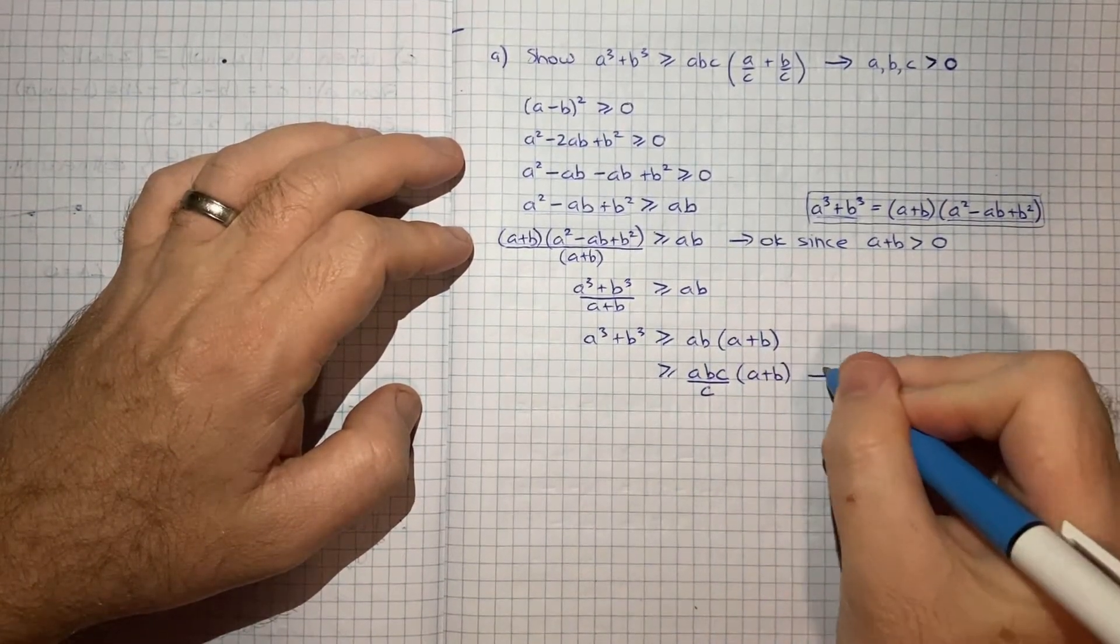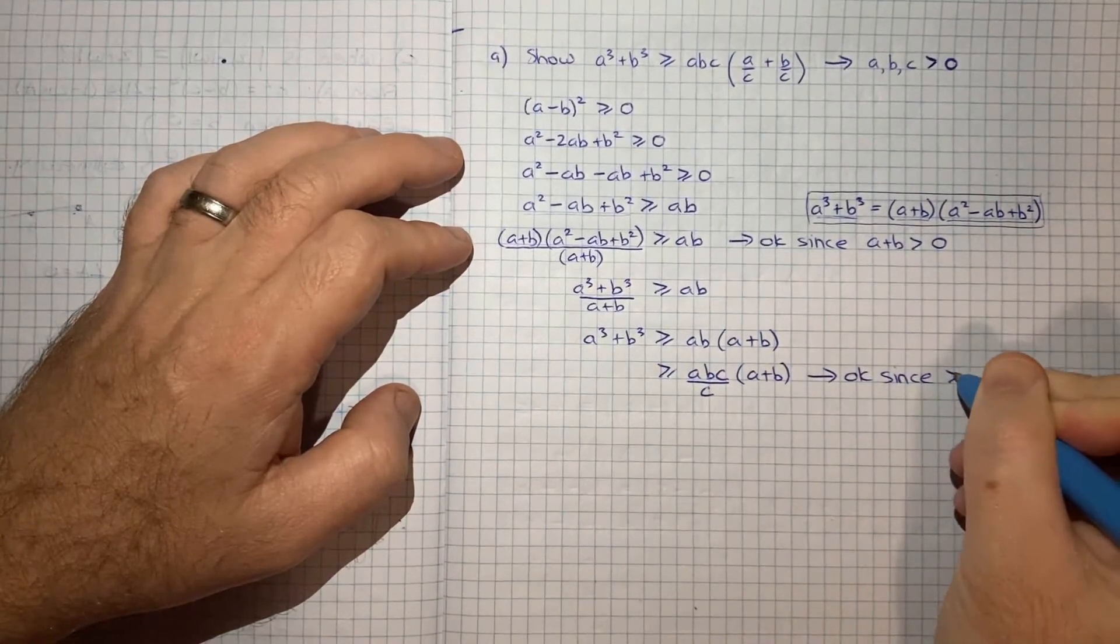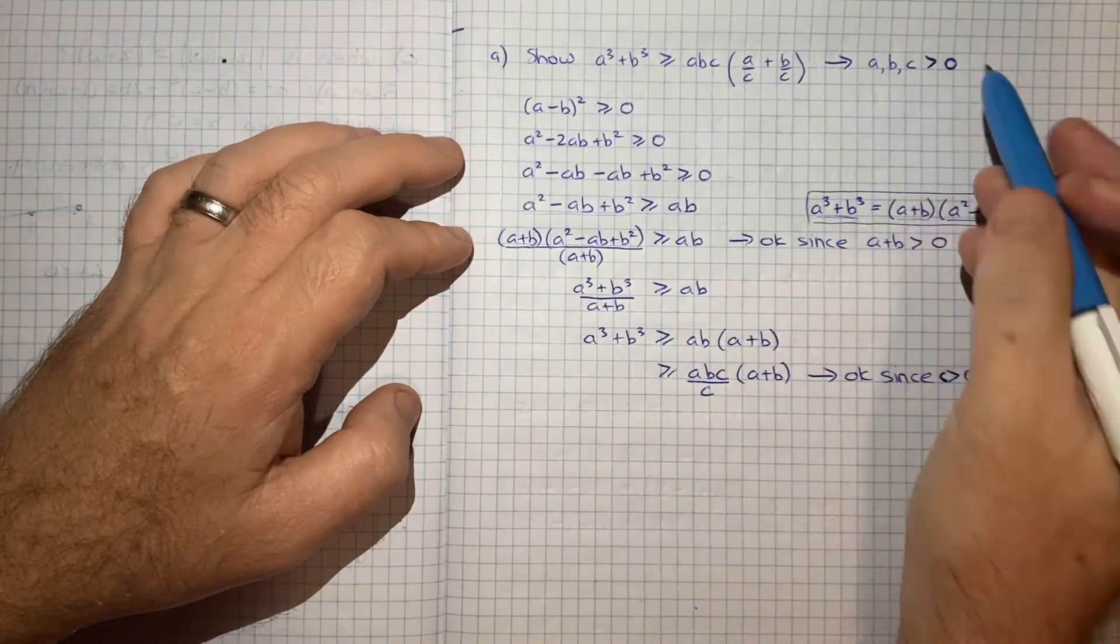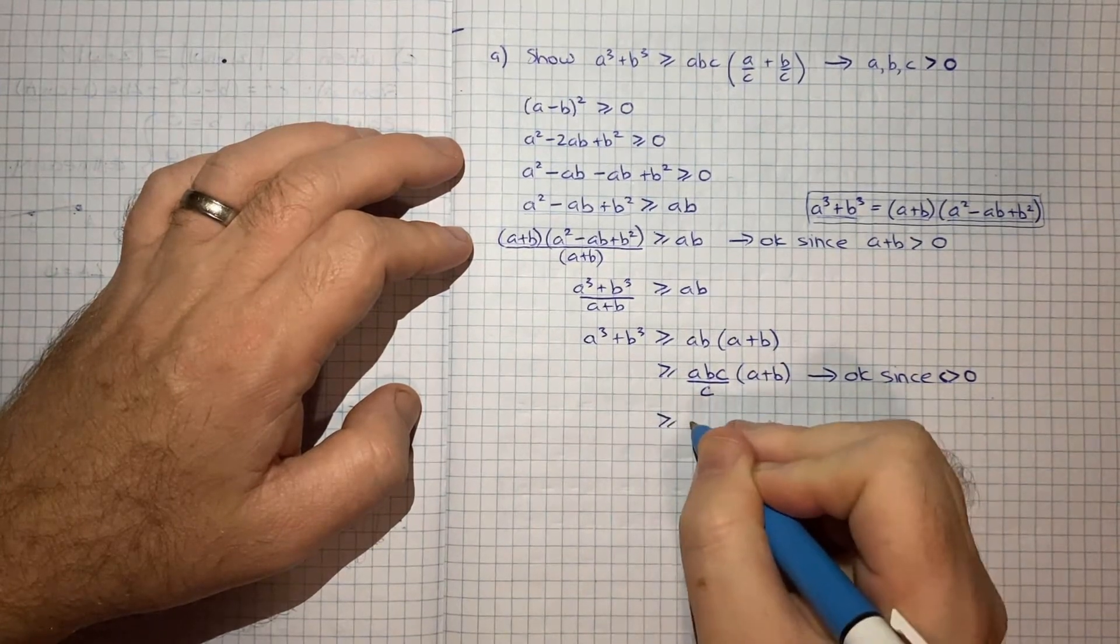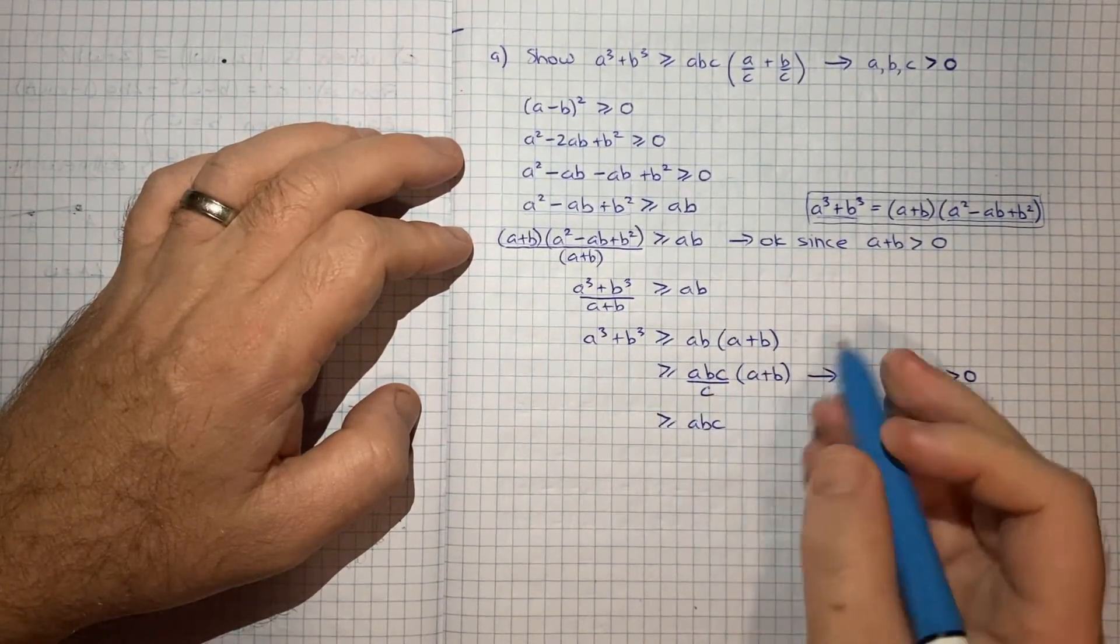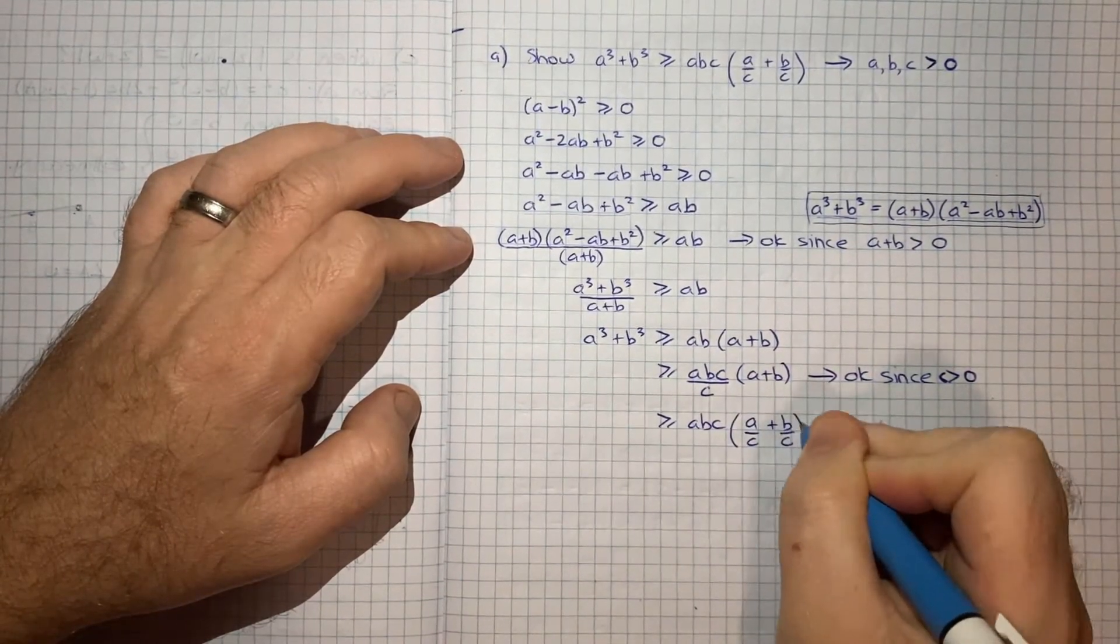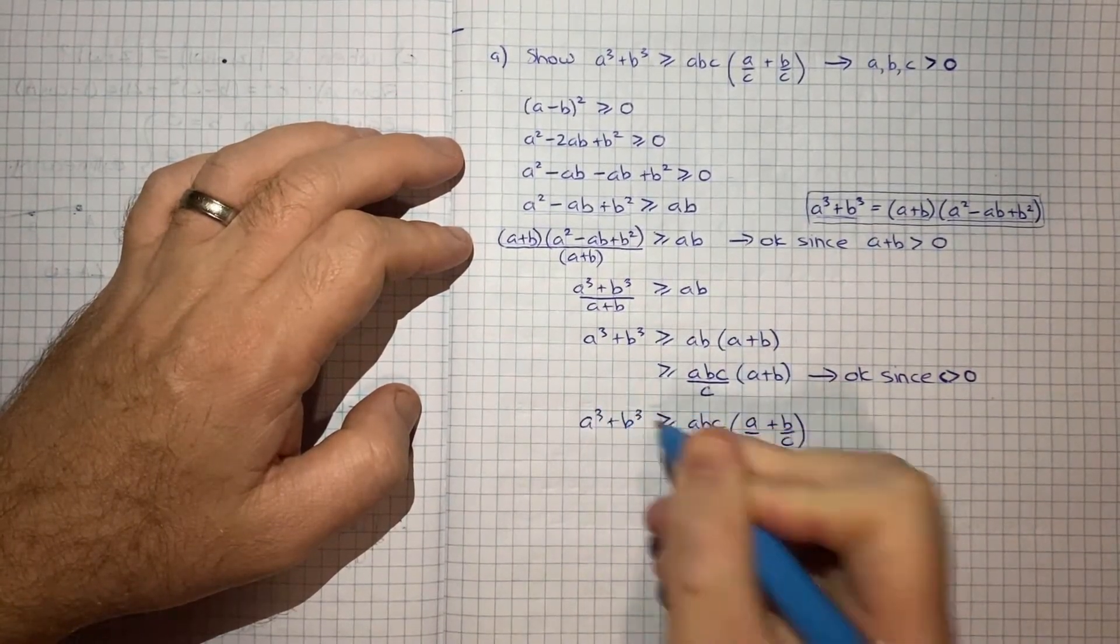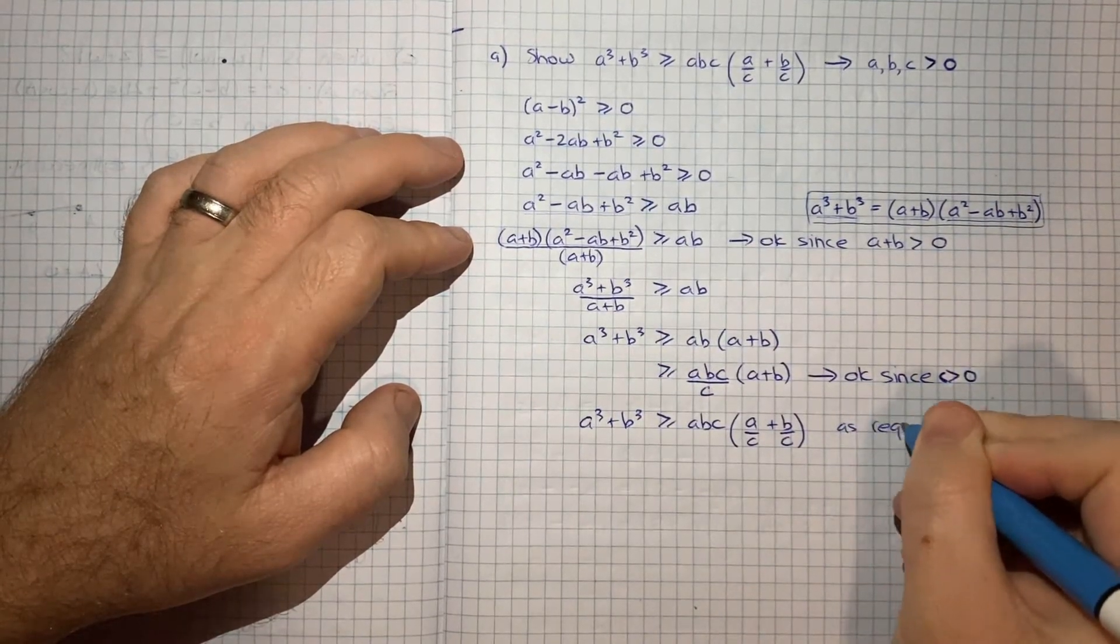And again, this is okay since we know c is greater than zero. So we don't have a divide by zero risk here. But now we can then say, well, that's abc, and I can bring this denominator inside. So we get a on c plus b on c. So that's our a cubed plus b cubed. And that's as required. That's what we were being asked to show.